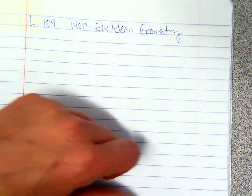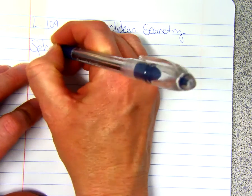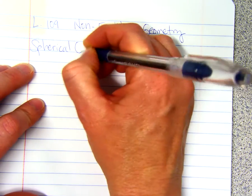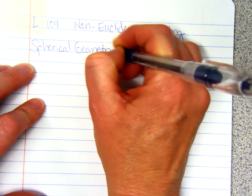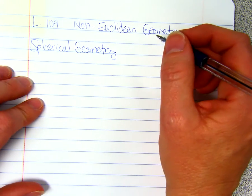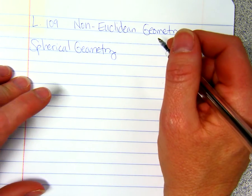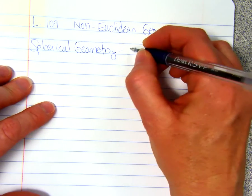One type is called spherical geometry, and that's what we're going to talk about today. That's just geometry defined on a sphere.